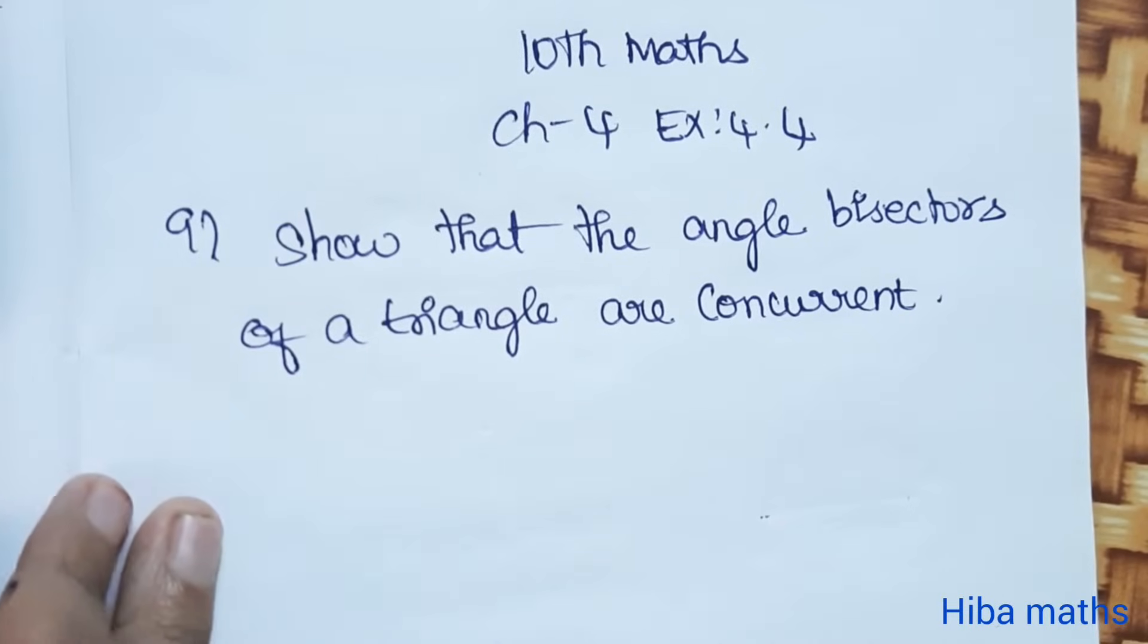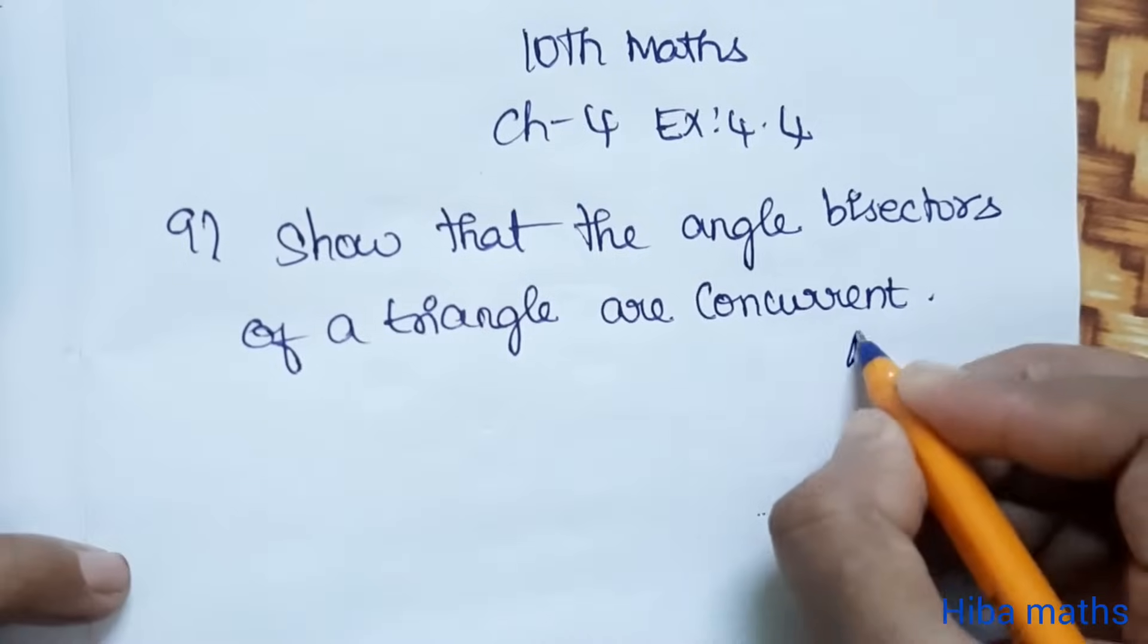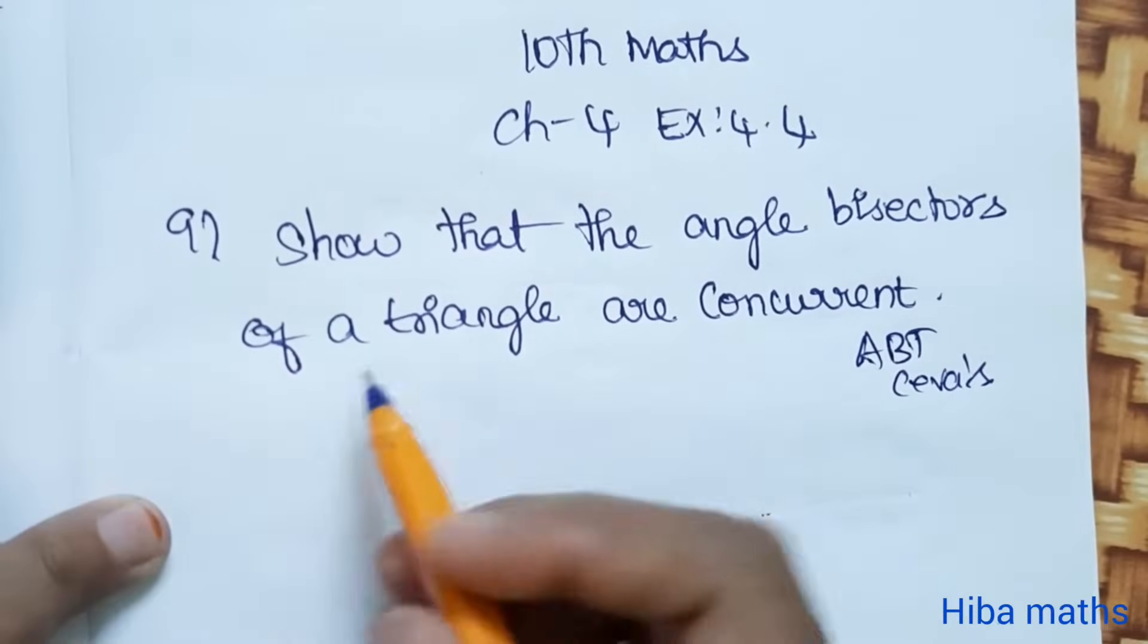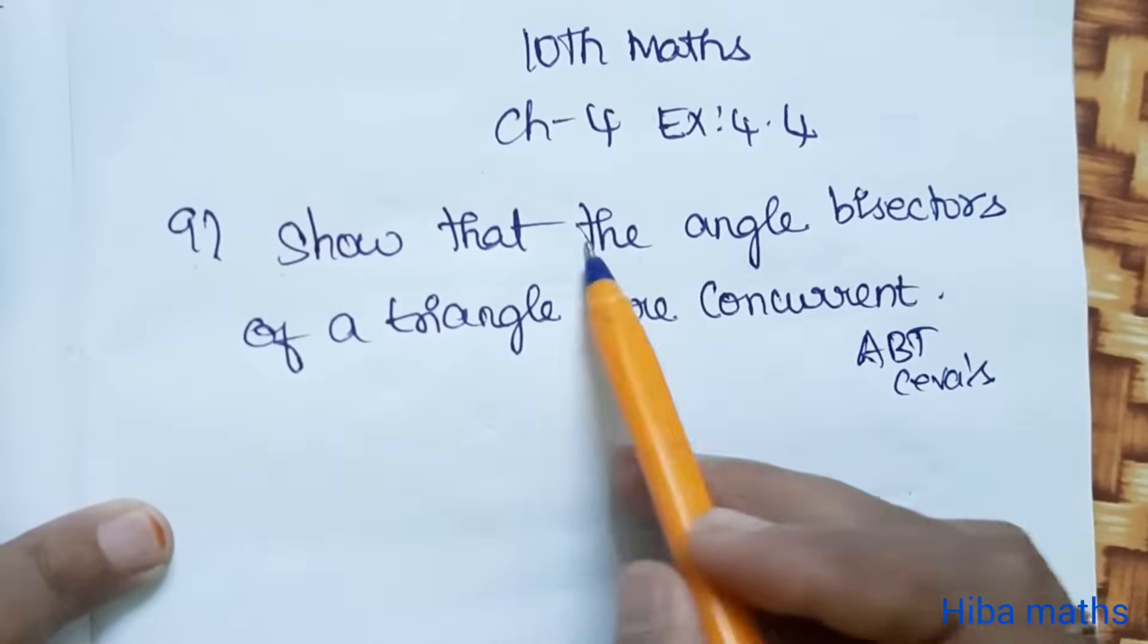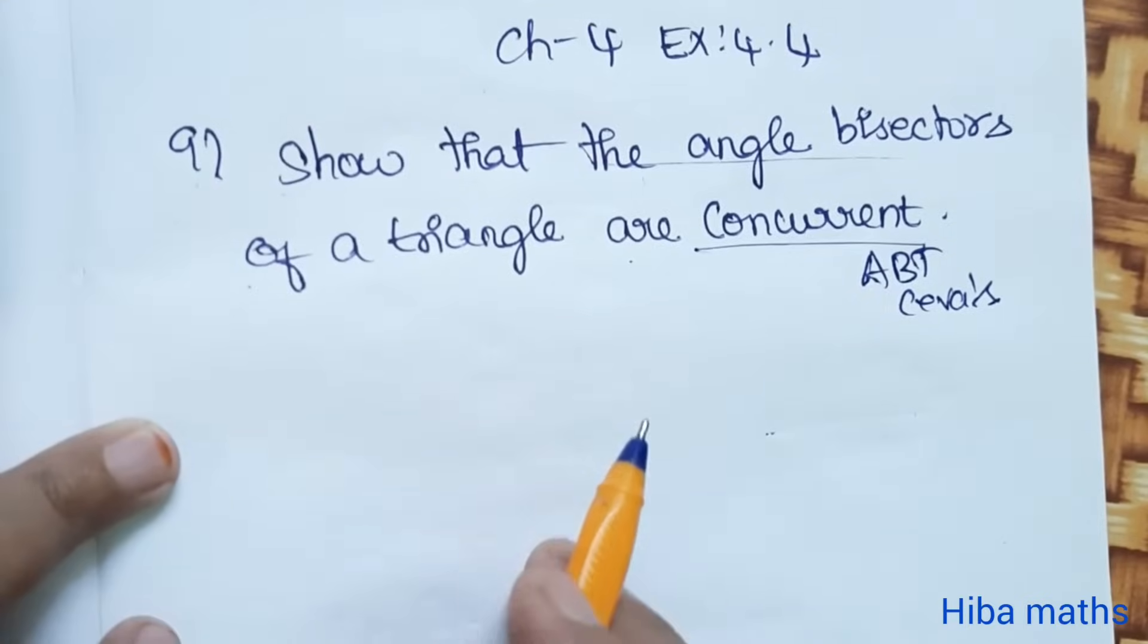This is a theorem, easy sum. In this sum, we use two theorems: angle bisector theorem and Ceva's theorem. Show that the angle bisectors of a triangle are concurrent.